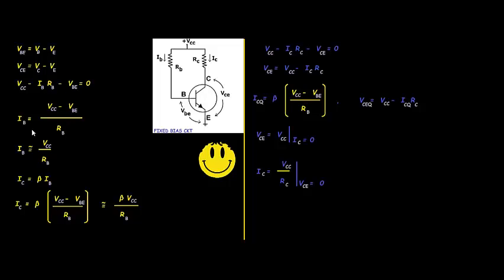Since VCC is large due to the resistance and VBE is very small, we can neglect VBE. So we approximate IB as equivalently equal to VCC divided by RB.